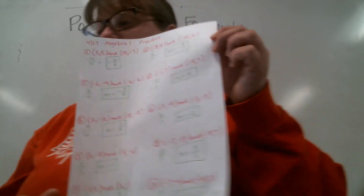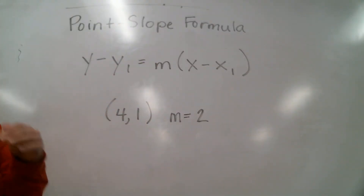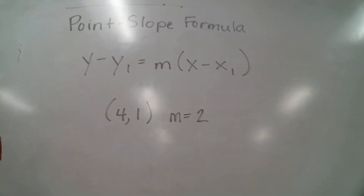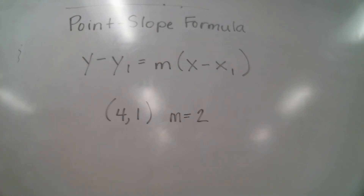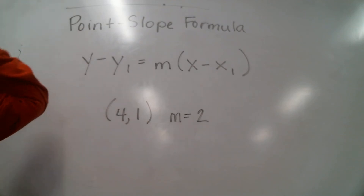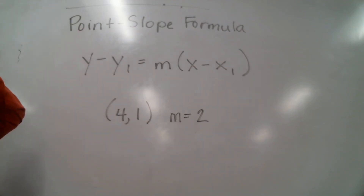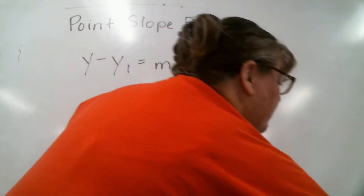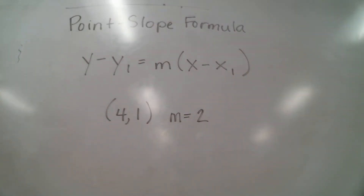Go ahead and copy down what's here. Remember we reviewed last week over slope-intercept formula, and then there's another formula that comes up — the point-slope formula. So sometimes if you're given a problem where you have a point and a slope and they're asking you to write an equation for that line, you can use the point-slope formula. Just remember: if you have a point and a slope, you can use the point-slope formula.